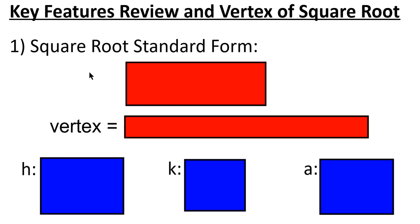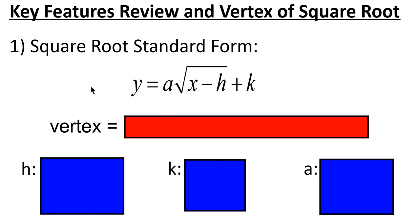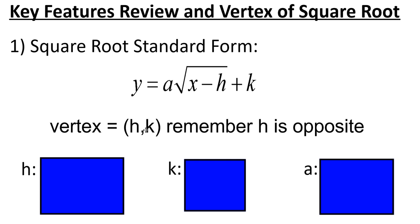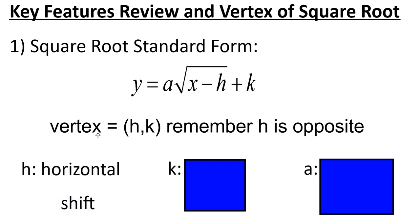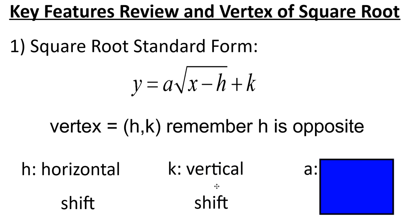The standard form we'll be looking at for a square root is a times the square root of x minus h plus k — very similar to the vertex form of our quadratics. The vertex is just the h and k value. Remember, h is always opposite because x always lies; h is your horizontal shift, so how much left or right you go. The h always lies, so you do the opposite. k is your vertical shift, so up or down.